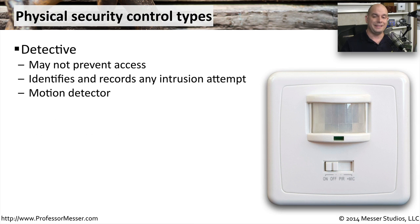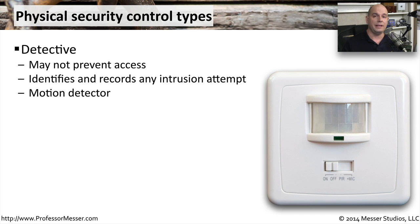Another physical control type is the detective control type. We are detecting access to a particular area of the organization. This probably is not going to prevent any type of access to the area, but it does give us information about what's going on. We might have, for instance, a motion detector that causes a camera to turn on and record anything that might be happening in that area. Later on, if we want to do some investigation, we can go to our detective control types to determine what was detected during that particular time frame — motion logs or actual video footage that we can compare to those time stamps.